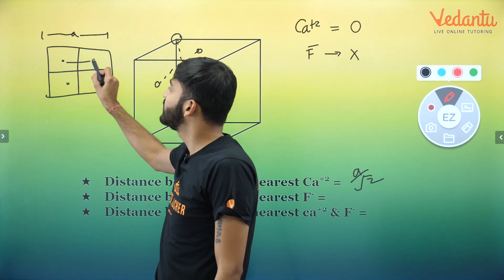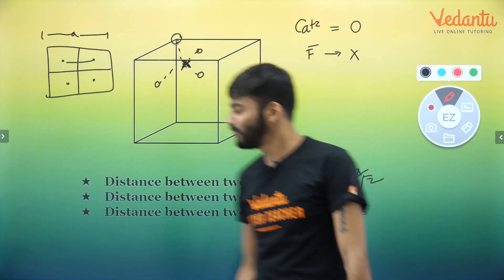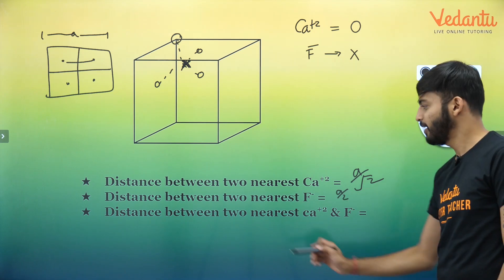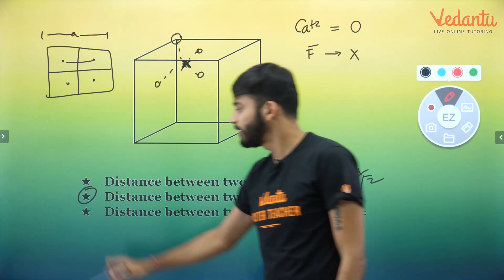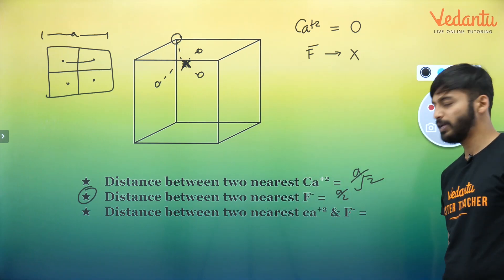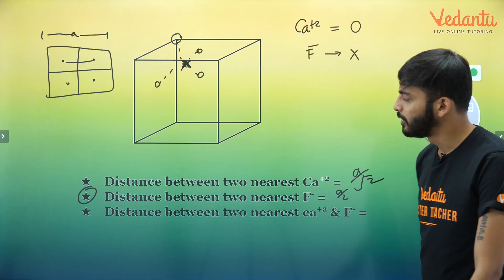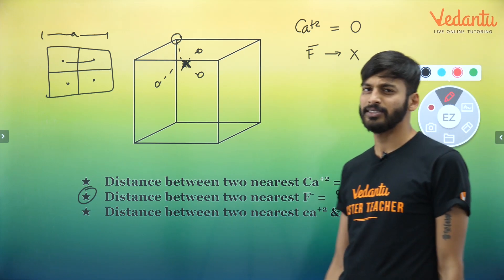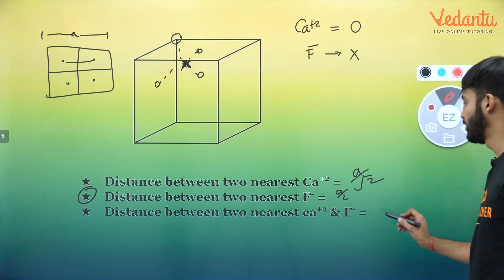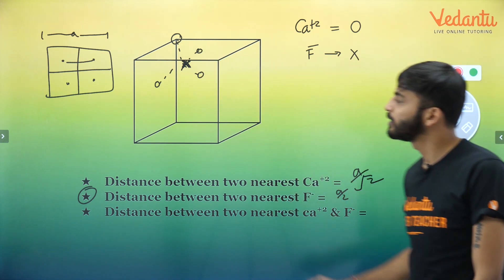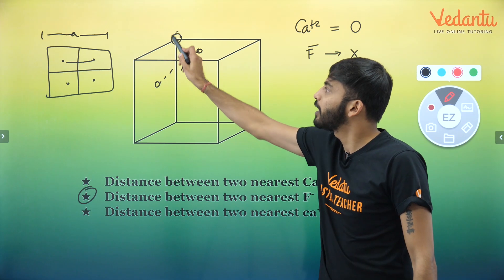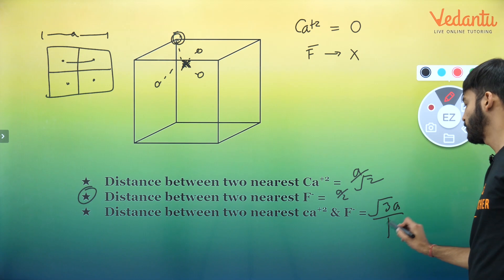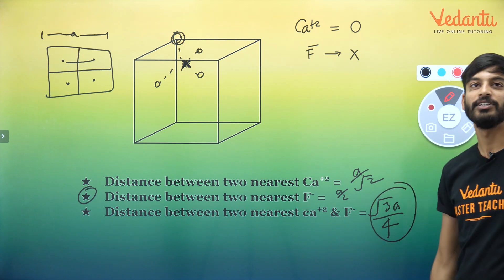The distance between the two nearest F⁻ ions will be a/2. And the distance between the two nearest Ca²⁺ and F⁻ — where the tetrahedral void is relative to Ca²⁺ — is √3a/4. We discussed this in the last class. √3a/4 is the answer. This structure is called fluorite.